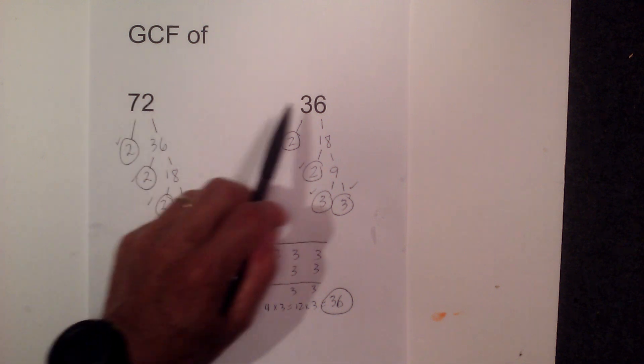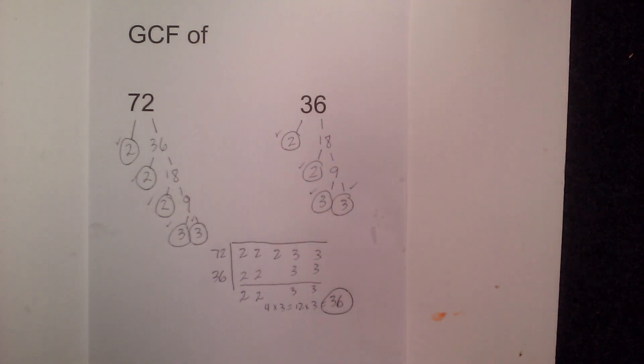So the greatest common factor of 72 and 36 is 36. I hope that helps, and MooMooMath uploads a new math and science video every day. Please subscribe and share.